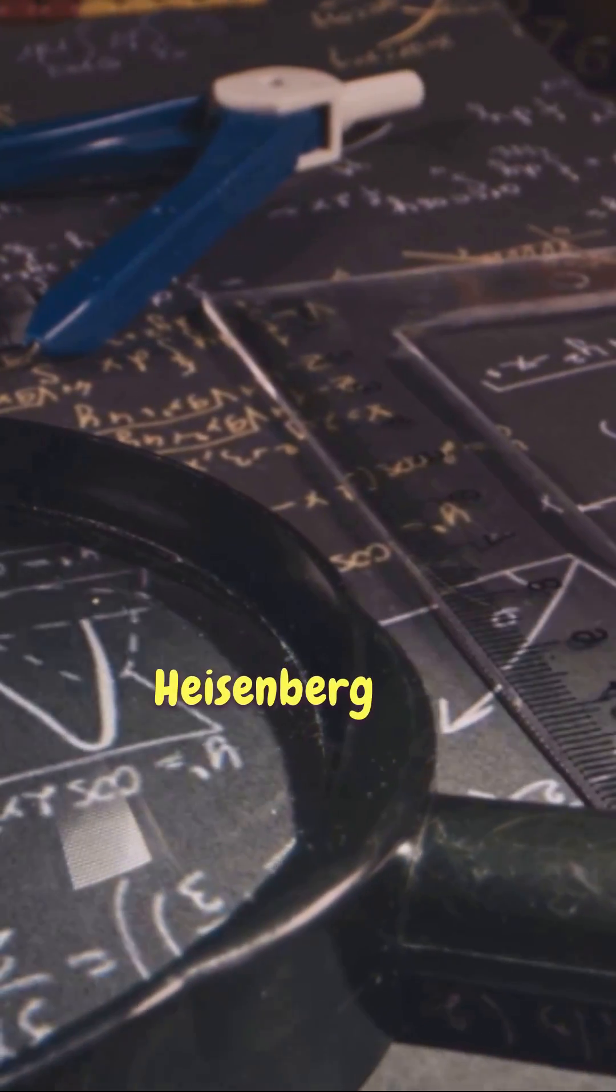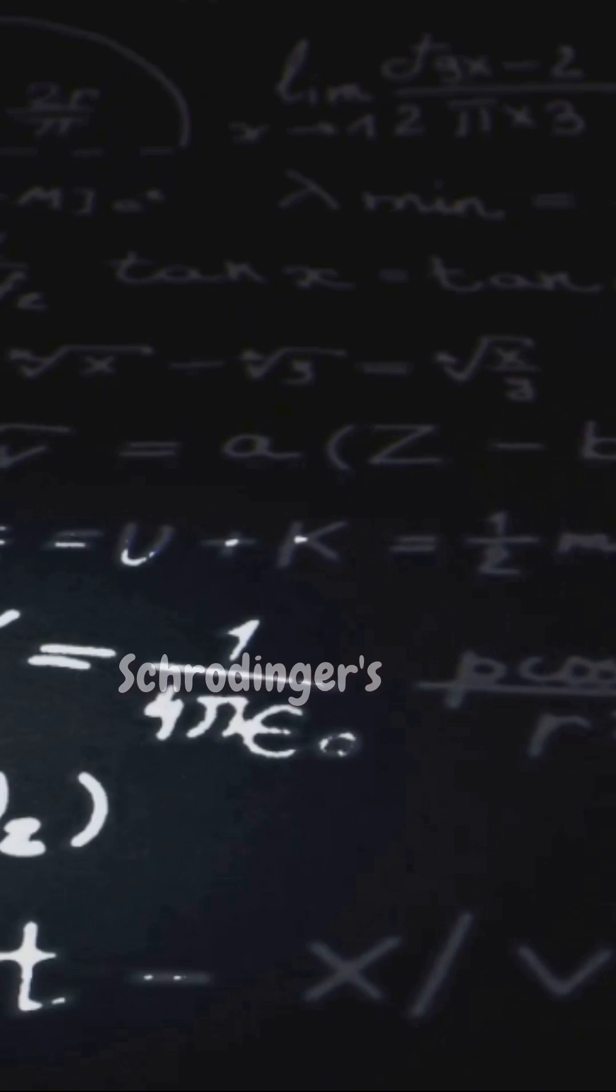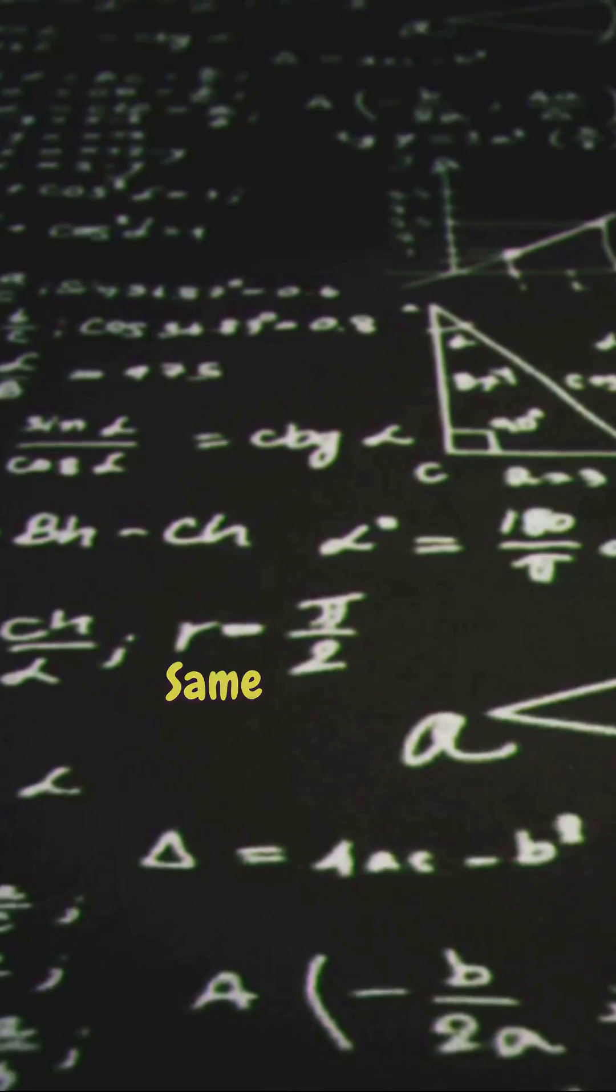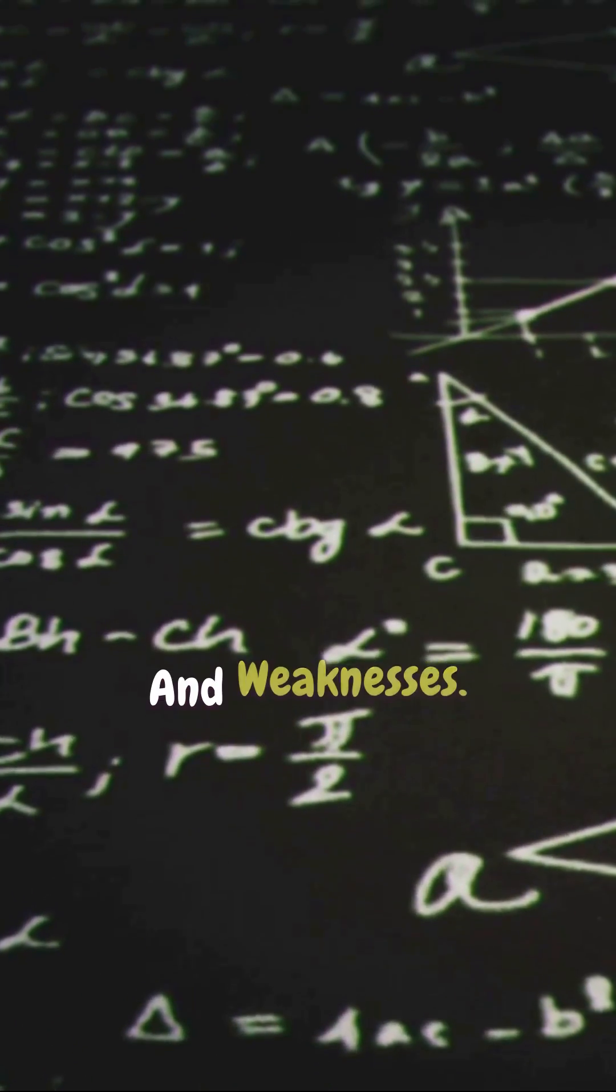So, there you have it. Heisenberg and Born's matrix mechanics, Schrödinger's wave mechanics, two different paths leading to the same quantum destination and each with their own strengths and weaknesses.